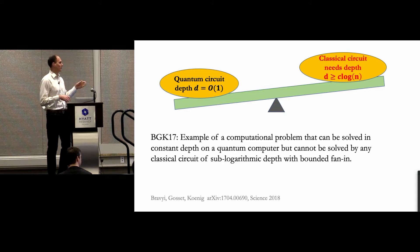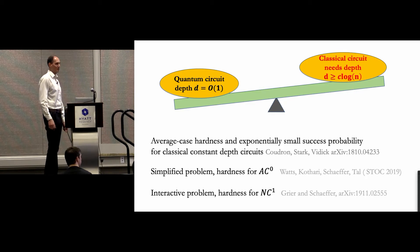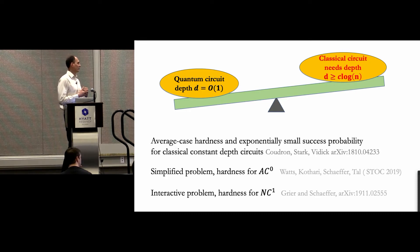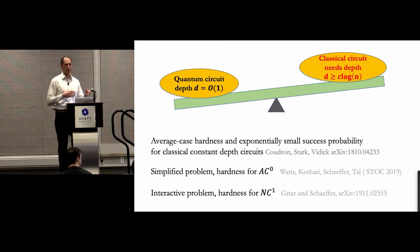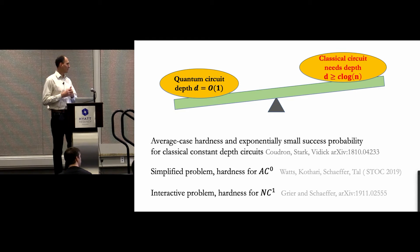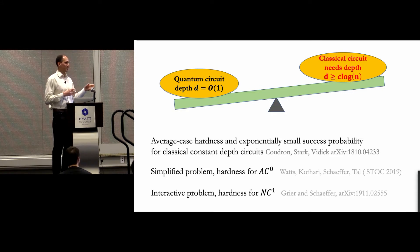I will describe the problem a bit later. This result was recently extended in several ways, with papers trying to make life easier for a classical computer solving the problem. Bravyi et al. established average case hardness and showed a classical circuit has only exponentially small chance of success. Then an amazing result by Watts et al. relaxed the bounded fan-in condition and proved hardness for the AC0 class. Just a few days ago, a new paper by Greer and Schiffer considered an interactive version of the problem and proved hardness for logarithmic depth classical circuits.